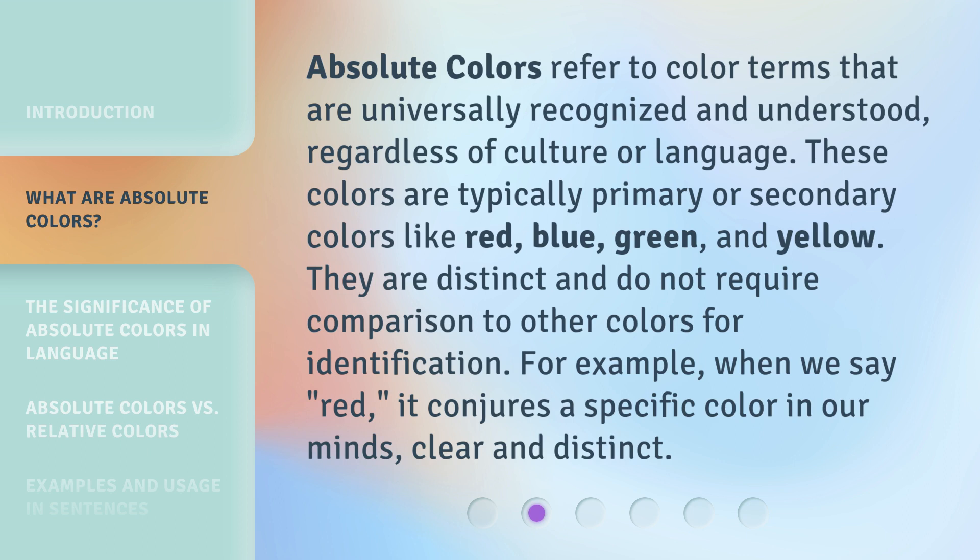Absolute colors refer to color terms that are universally recognized and understood, regardless of culture or language. These colors are typically primary or secondary colors like red, blue, green, and yellow. They are distinct and do not require comparison to other colors for identification. For example, when we say 'red,' it conjures a specific color in our minds, clear and distinct.